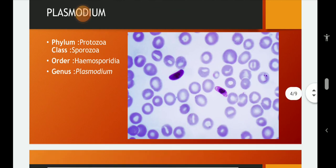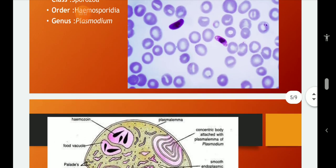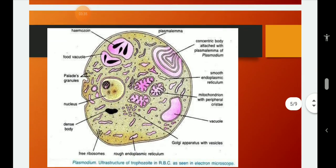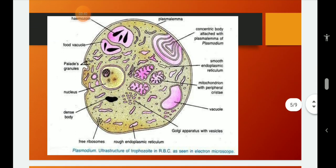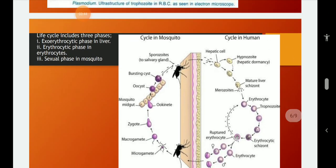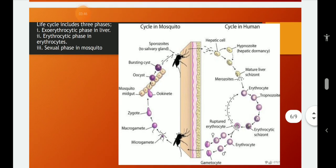And it is a digenetic parasite involving a man as an intermediate host and mosquito as the primary or definitive host. And life cycle includes three phases, exoerythrocytic phase in liver, erythrocytic phase in erythrocytes and sexual phase in mosquito.